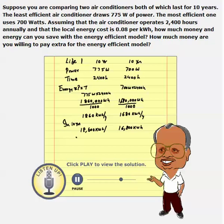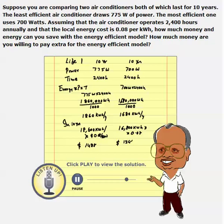We know the price of electricity — it is sold at the rate of $0.8 per kilowatt-hour. So multiplying both sides by 0.8, the cost to operate the less efficient one would be $1,488, and the more efficient one would be $1,344. So the difference is $144, meaning the least efficient one costs $144 more to operate.